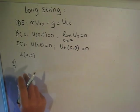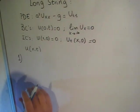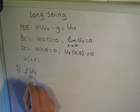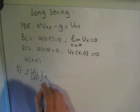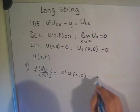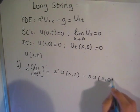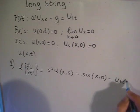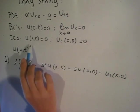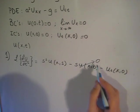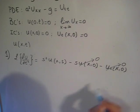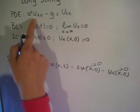Step one: we are going to apply the Laplace transform to every single term in the PDE. Starting with the right-hand side, we know that the Laplace transform of d²u/dt² is equal to s²U(x,s) minus s·u(x,0) minus u_t(x,0). When we look at our initial conditions, we can see that u(x,0) is 0, therefore this term cancels, and u_t(x,0) is 0, therefore this term also cancels.